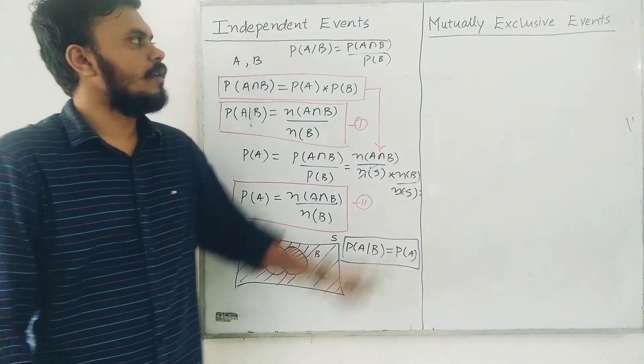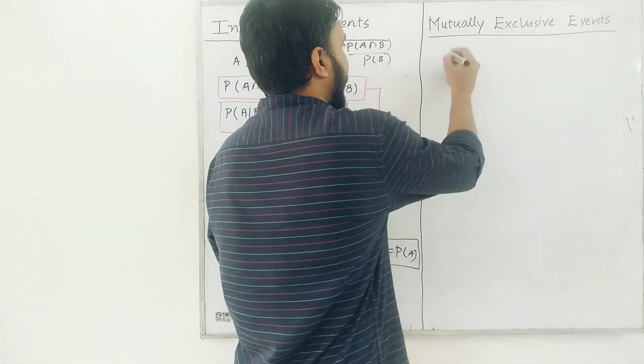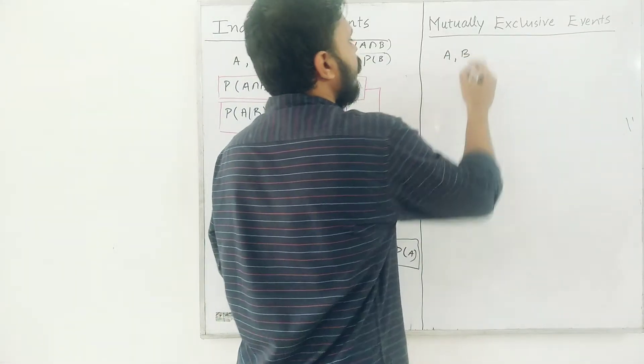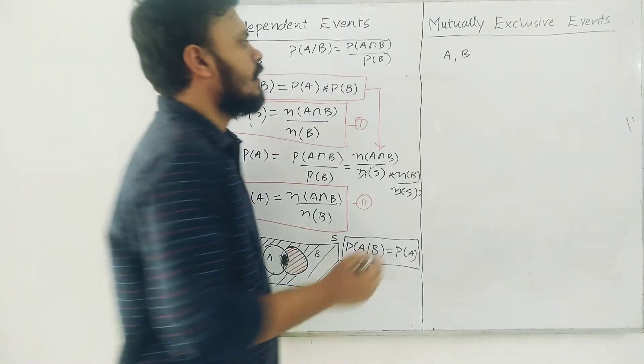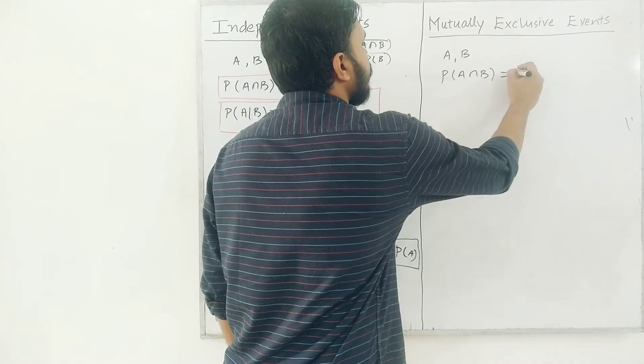So now let's discuss mutually exclusive events. Two events A and B are said to be mutually exclusive when this is true: P of A intersection B is equal to 0.